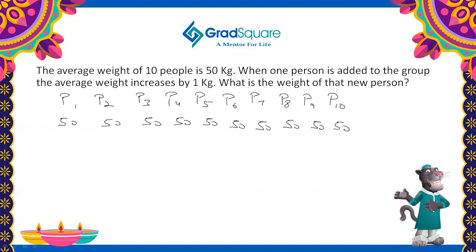So I have equally distributed 50 kg to all the people, so the total weight of the 10 people does not change. Now the second statement says when one person is added to the group, the average weight increases by 1 kg. There is a new person added to the group — let me call this new person P11. When P11 joins the group, the average weight increases by 1 kg, so for everyone there is an increase of 1 kg.